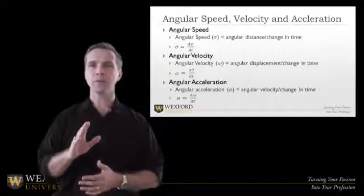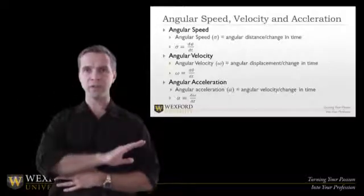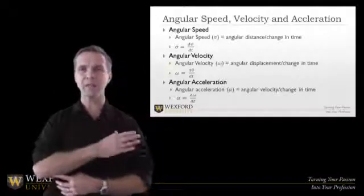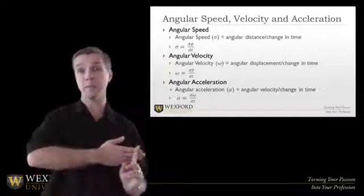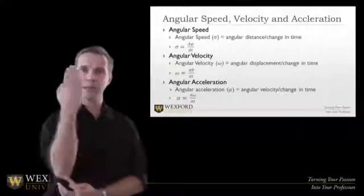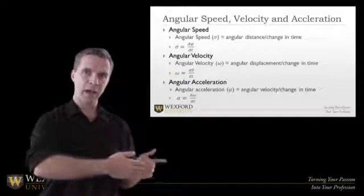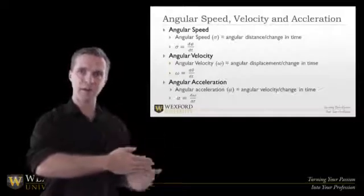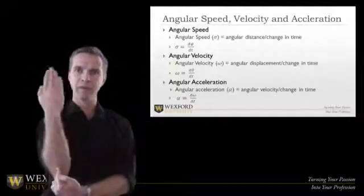One thing I would like to point out is when we look at something going in a rotary fashion, notice the actual linear distance definitely changes depending on how far you are along this lever. If I move from here to here, if I move that 90 degrees, you can see how much distance my fingertips are traveling, while right next to my elbow, this little point right here isn't moving very much.